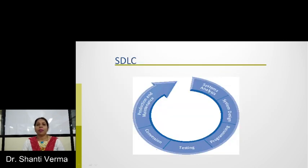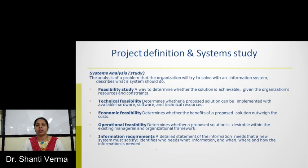The system development life cycle is basically a linear or sequential process. The first step is system analysis, next is system design, programming, testing, conversion, and then production and maintenance. There are various types of system analysis available like feasibility study, technical feasibility, economic feasibility, operational feasibility and information requirement.